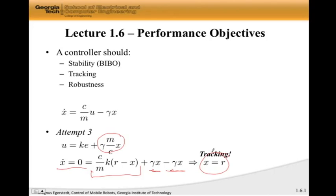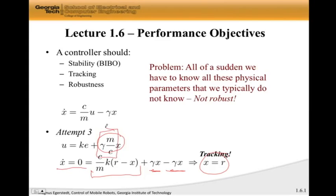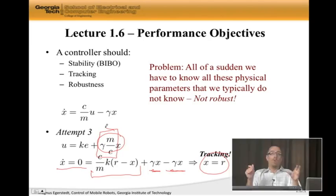Why is this? We have stability, we have tracking, but we don't have robustness. Here are three things we don't know: gamma, m, and c. Our controller depends explicitly on these coefficients. We have to know all these physical parameters that we don't know. This is not a robust control design. So attempt three is a failure.